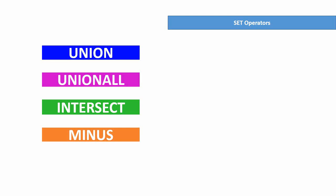Here are the four set operators provided by Oracle: union, union all, intersect, and minus. These are all very simple and easy to understand. You only need to follow two rules: the number of columns must match across the queries and the data types must match. For easier understanding the examples I'm going to show use only one column, but keep in mind you can have any number of columns.